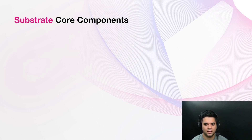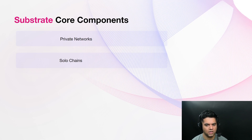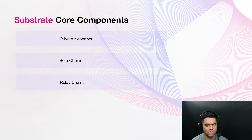Substrate-based blockchains can be used in different types of network architecture. Private networks are restricted to only the nodes that have access to the network, and any custom criteria can be set for nodes to gain access. Solo chains implement their own security protocol and don't connect or communicate with any other chains — Bitcoin and Ethereum are examples of non-substrate-based solo chains. Relay chains provide decentralized security and communication for other chains that connect to them; Kusama and Polkadot are examples. Relay chains are at the core of Polkadot, and all parachains connect to relay chains to extend their functionality.